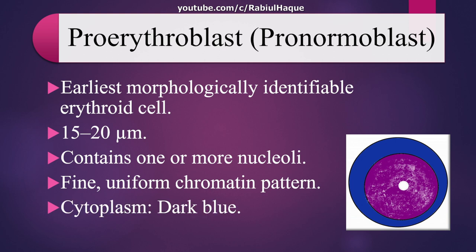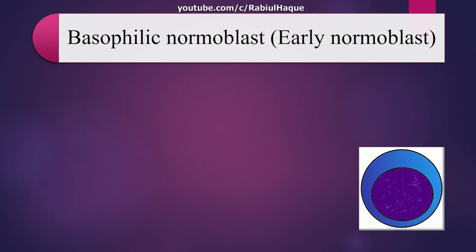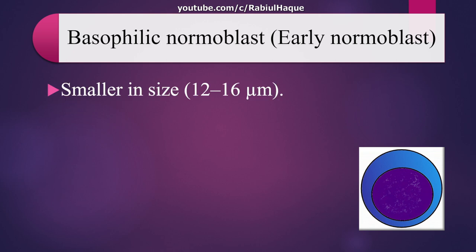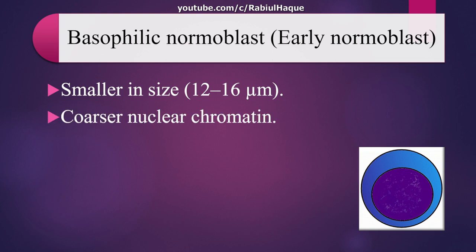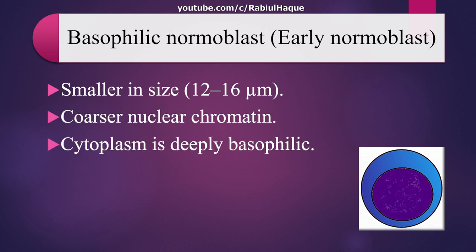The next stage is known as early normoblast or basophilic normoblast. These are smaller than the previous stage, with a diameter of 12 to 16 micrometers. They will have coarser nuclear chromatin, and the cytoplasm is still deeply basophilic.